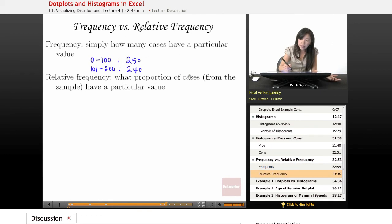Now relative frequency is what proportion of cases from the sample have that particular value. So if you had 250 people having friends between zero and 100, having between zero and 100 friends, what is that in relation to your entire sample?